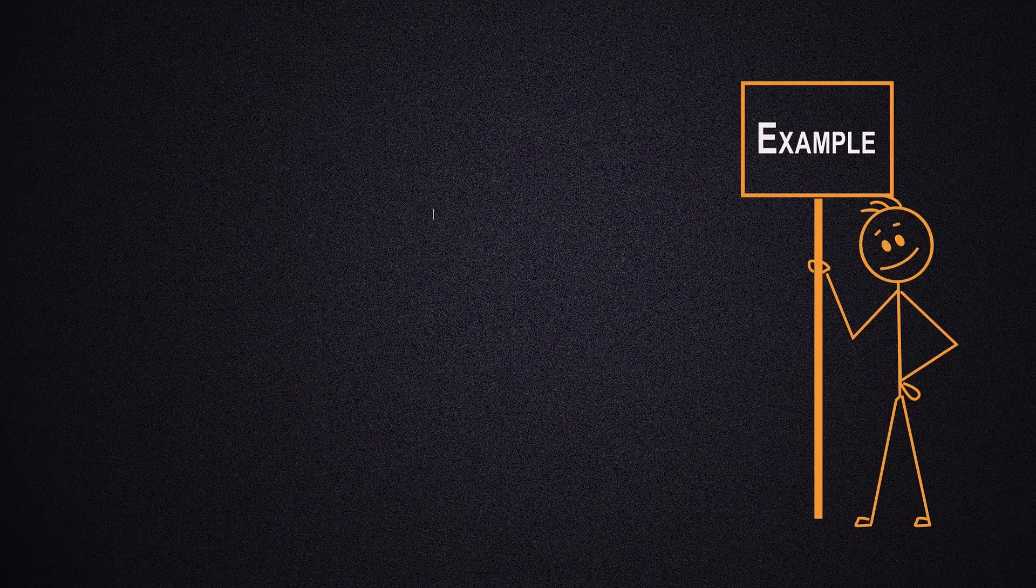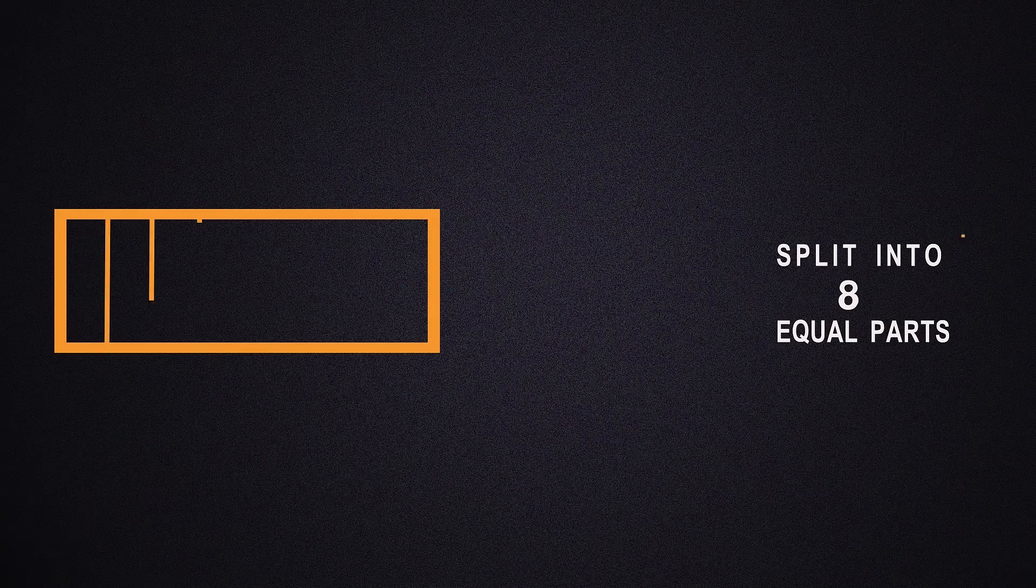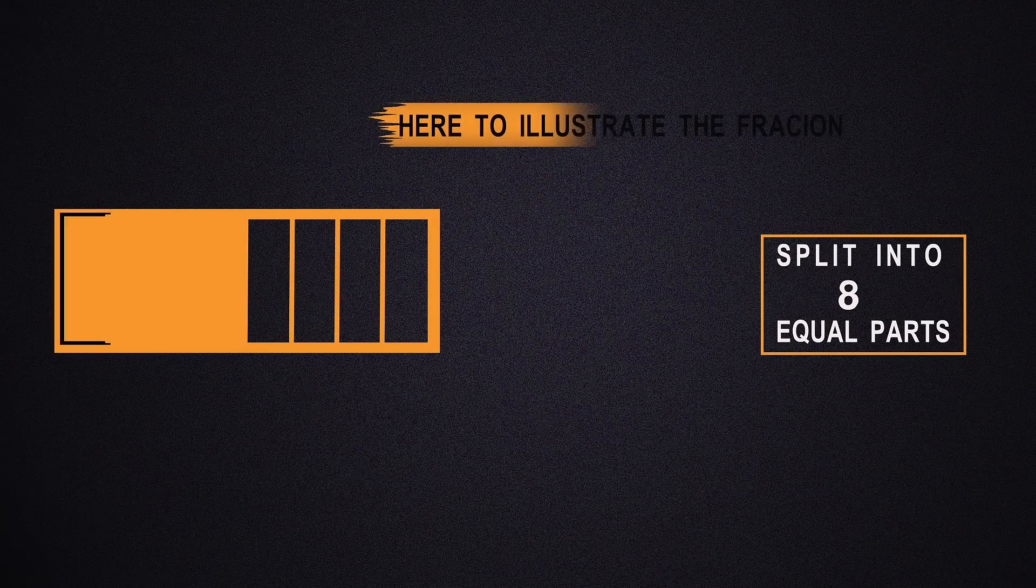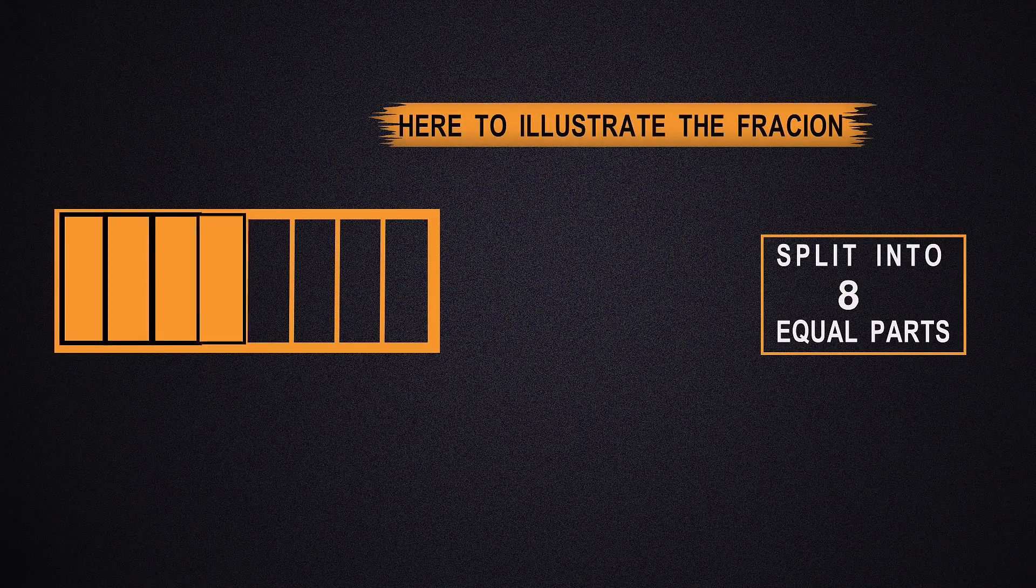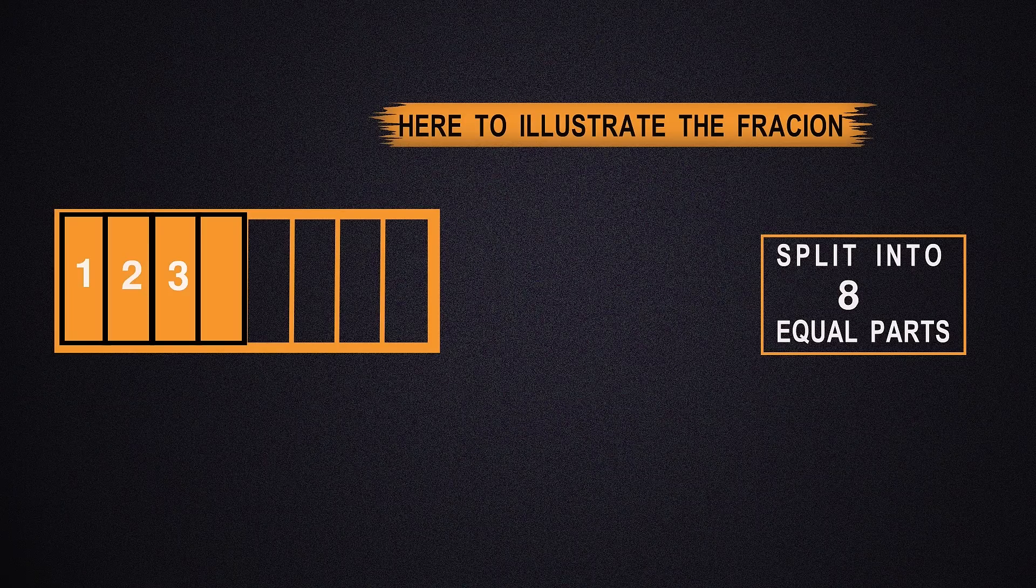Here we have a rectangle. This rectangle has been split into eight equivalent parts. Suppose one, two, three, four of those parts are shaded.